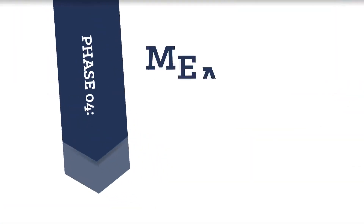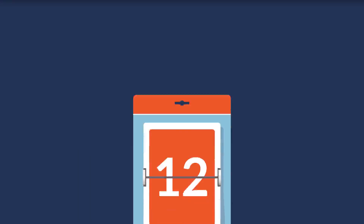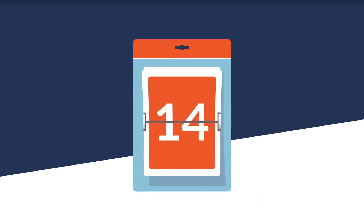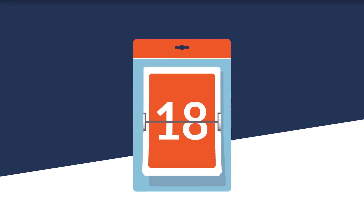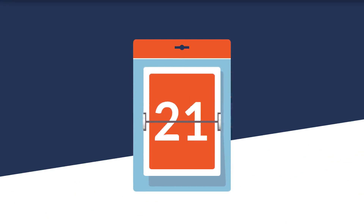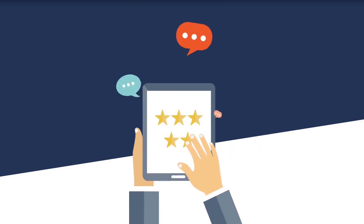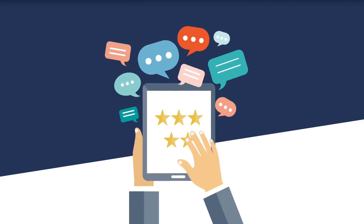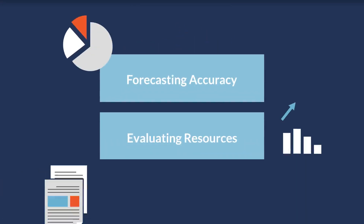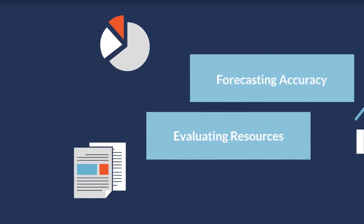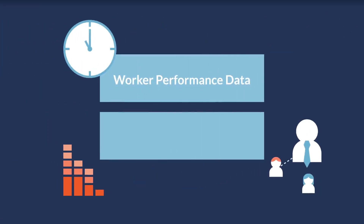Phase four: measure, learn, and adjust. The end of one scheduling period means a new one is about to start. Such transition points often serve as triggers for payroll and numerous operational reports. Despite the repetitive nature of scheduling, it is critical to periodically review scheduling processes, employee feedback, and business KPIs. Make sure to assess the following areas in your review: forecasting, resource evaluation, worker performance data, and the scheduling process itself.